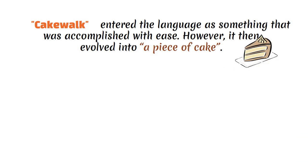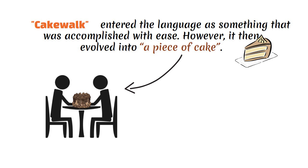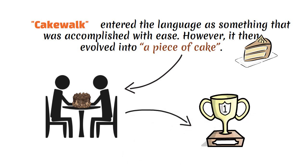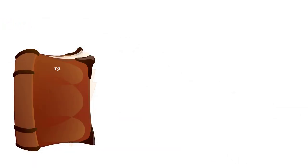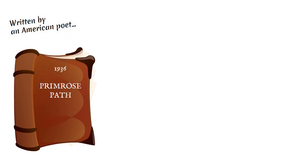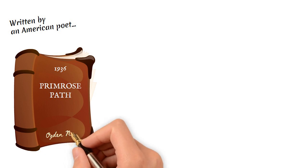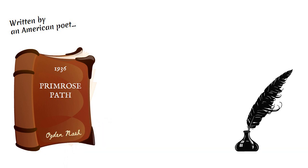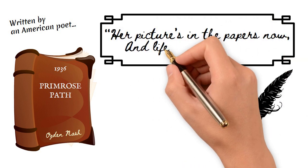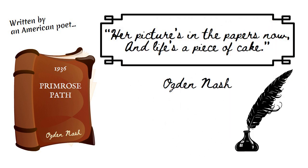Though we can imagine that it was probably easier to eat the awarded cake than actually win it. The phrase itself was most probably first recorded in 1936 in 'A Primrose Path' written by American poet Ogden Nash. The sentence from the book read: 'Her pictures in the papers now and lives a piece of cake.' Interesting, right?